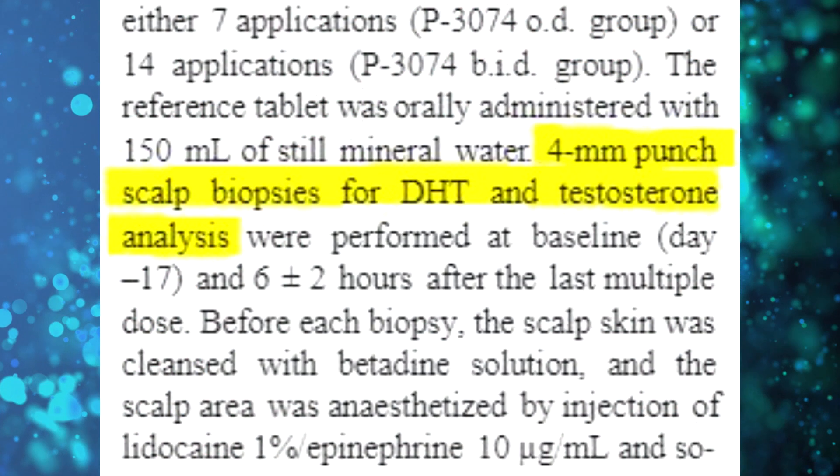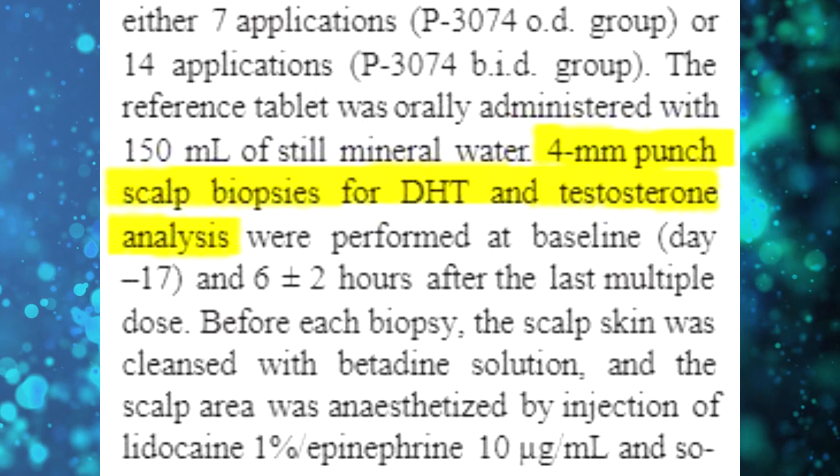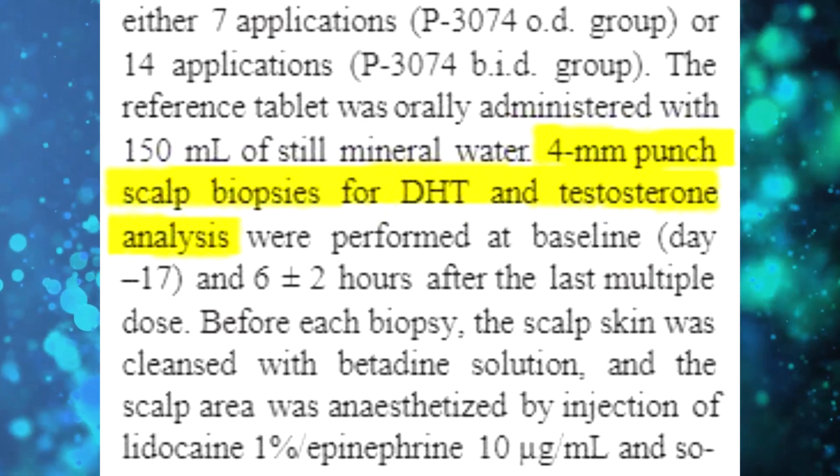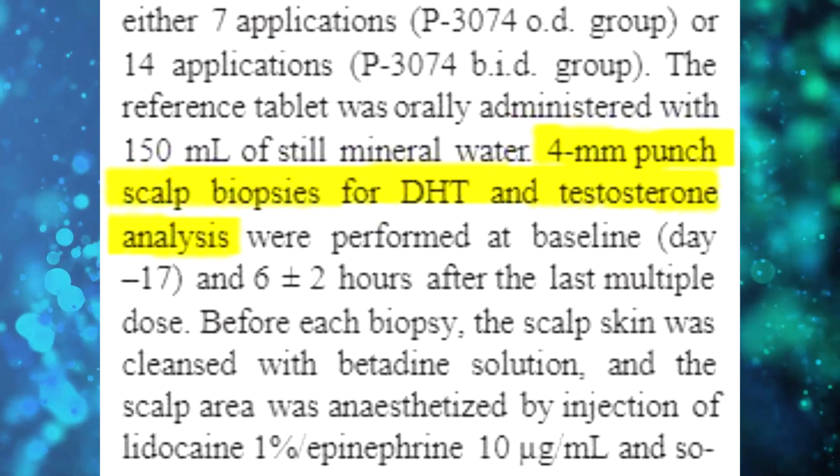They also used four-millimeter punch scalp biopsies for scalp DHT and testosterone analysis. These analyses were performed at baseline and six hours after the last multiple dose. So with 0.025% topical finasteride you are able to suppress scalp DHT by about 52% and serum DHT by only 24%, whereas with the 10 times stronger 0.25% solution you can inhibit scalp DHT by as much as 70%, but expect your plasma DHT to be reduced by as much as 75 to 80%.